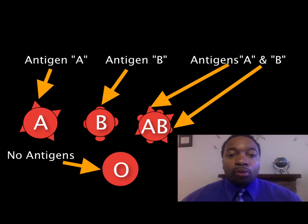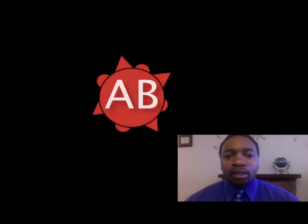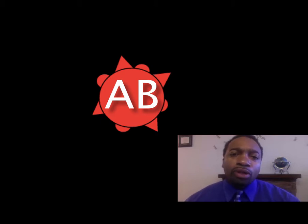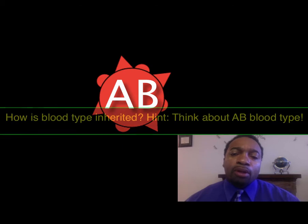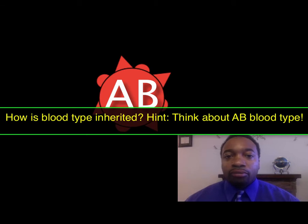So we're going to talk about how blood types are inherited. The AB blood type gives us a clue about that inheritance. I want you to pause the video for a moment and think through how blood type is inherited, knowing that there's an AB blood type. That should give you a good idea. Pause the video, write down your thoughts, and then unpause it when you're ready to proceed.